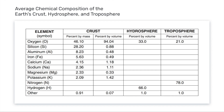So this chart is very simple to read. It simply tells us how much of each element is making up each of the crust, hydrosphere, and troposphere.